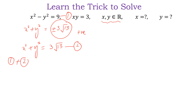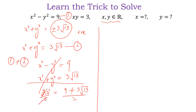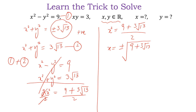Now if we add equation 1 and equation 2, we have x squared minus y squared equal to 9, and x squared plus y squared equal to 3 root 13. Adding both equations gives 2x squared is equal to 9 plus 3 root 13. Dividing both sides by 2, we get x squared is equal to (9 plus 3 root 13) divided by 2.